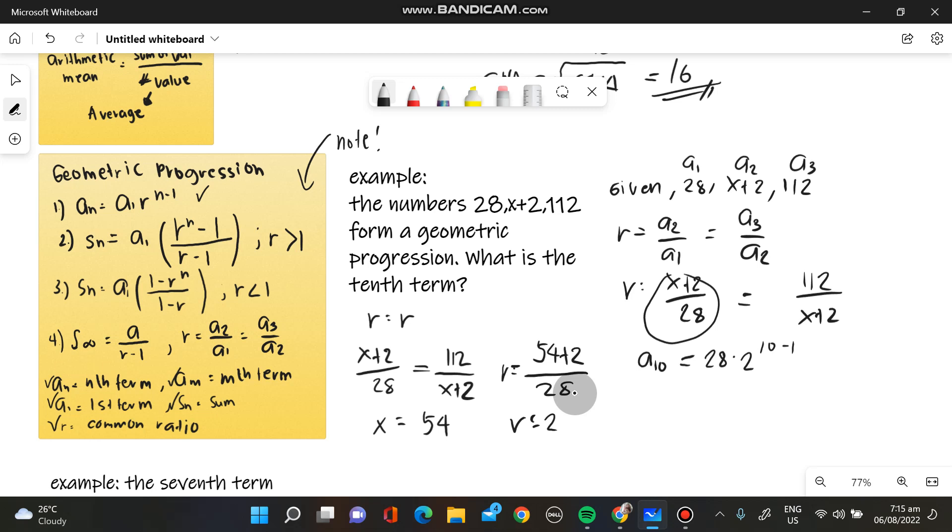When we solve this one, our A sub 10 will be equivalent to 14,336. So that is our final answer.